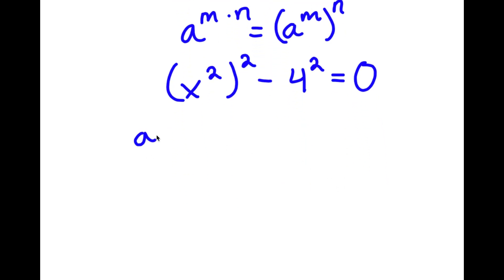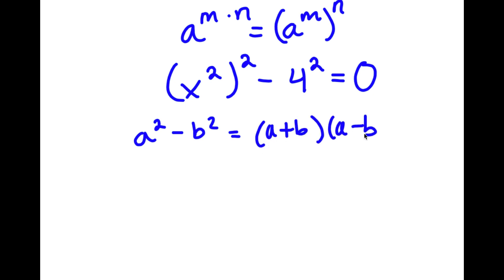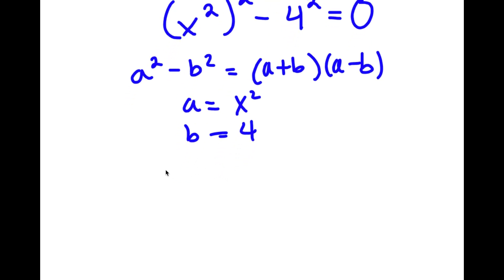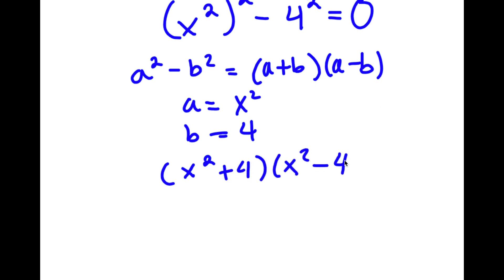Now if I have something in the form a squared minus b squared, this is equal to a plus b times a minus b. So in this case, a is x squared and b is 4. So now I have x squared plus 4 times x squared minus 4 is equal to 0.